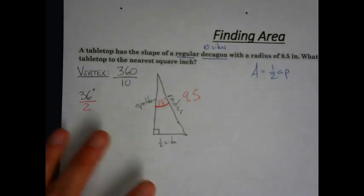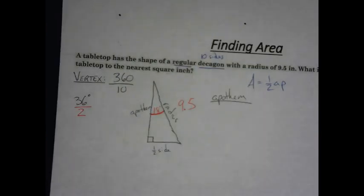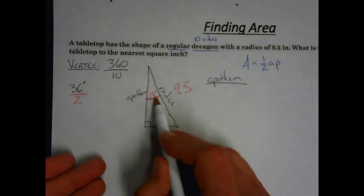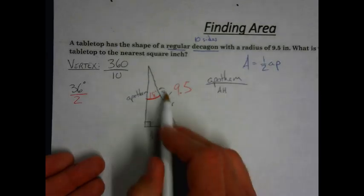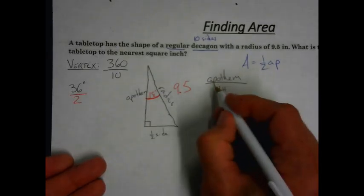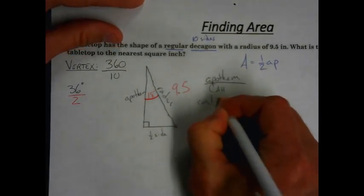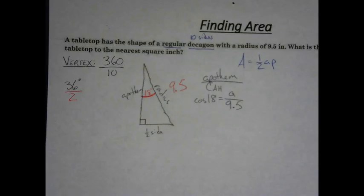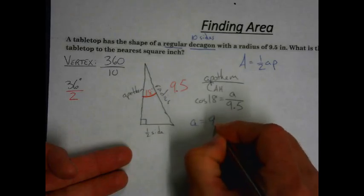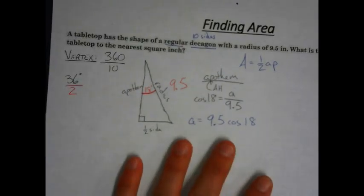Let's find the apothem first. We look at our pop-out triangle — we have the angle of 18 degrees, the apothem, and the hypotenuse. The apothem is adjacent to the angle, so we use cosine. We set up the equation: the cosine of 18 degrees equals the apothem over the hypotenuse of 9.5. Solving for the apothem by multiplying both sides by 9.5, we get: apothem equals 9.5 times the cosine of 18. We have now found our apothem.